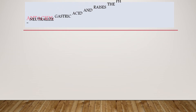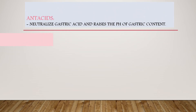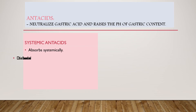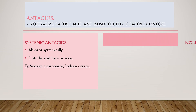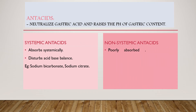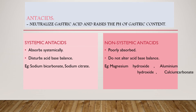Antacids do not decrease acid production; they neutralize gastric acid and raise the pH of gastric contents. Antacids are of two types: systemic and non-systemic. Systemic antacids disturb the acid-base balance and are absorbed systemically — examples are sodium bicarbonate and sodium citrate. Non-systemic antacids are poorly absorbed; they are basic compounds that react with gastric hydrochloric acid to form corresponding salts and thus do not disturb the acid-base balance.